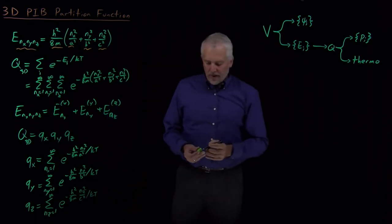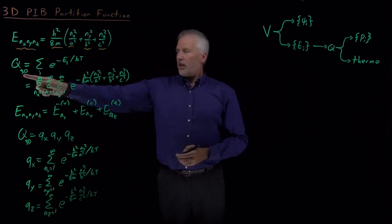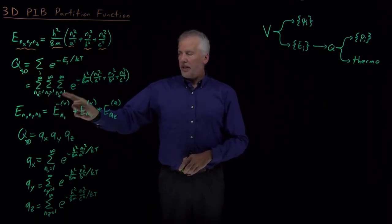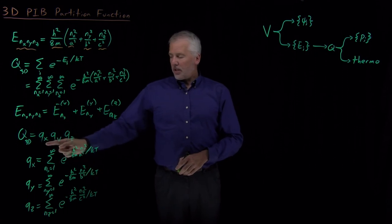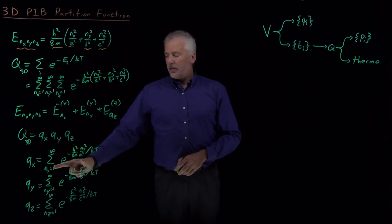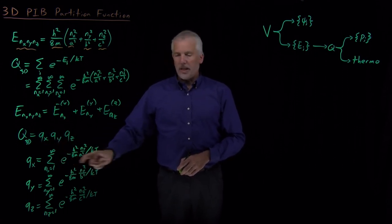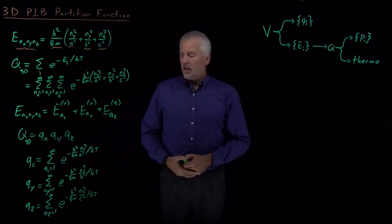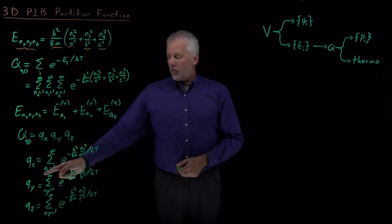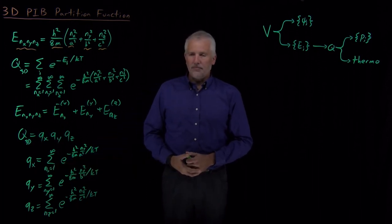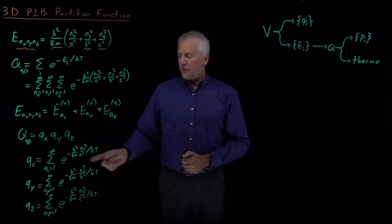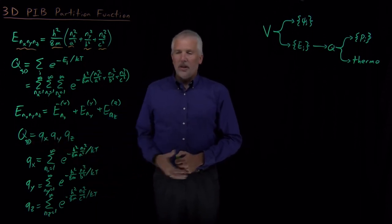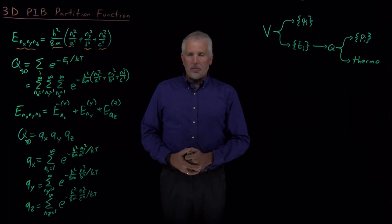So, we've made some progress. We've converted our partition function for the 3D particle in a box, which involved this triply infinite sum, into just the product of three different partition functions, each of which now only involves a single infinite sum. So, it's still going to be a little bit of work to figure out what this infinite sum is equal to, and that's what we'll do in the next video lecture. But if we take the product of those three slightly easier problems, that will give us the value for our 3D particle in a box partition function.